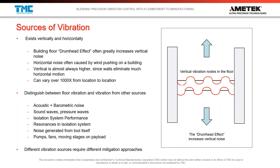Vibration exists both vertically and horizontally. When a building sways in the wind, you might measure that as horizontal left-right or front-back vibration. But it can also exist vertically — tension on the walls as they join the floor creates a drum-head effect, and that torsional mode on the corners of a building can cause the floor to move up and down. Vibration is also like a standing wave — it can vary a thousand times from location to location, with peaks, valleys, and nodes.